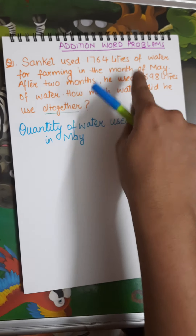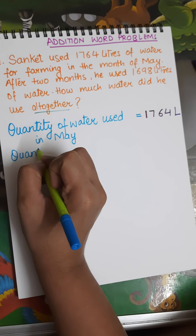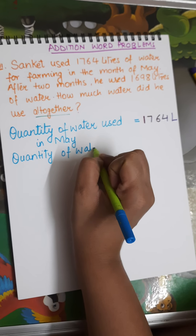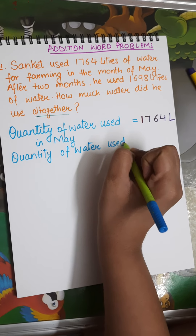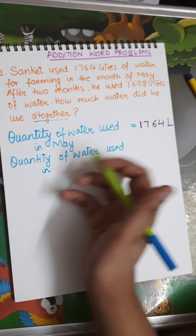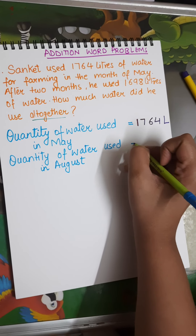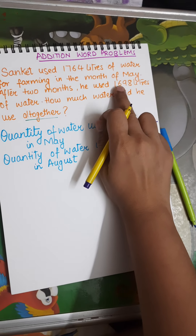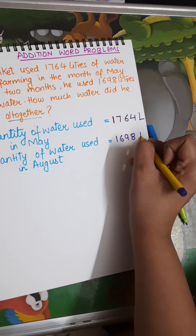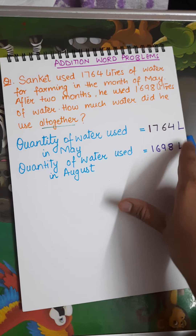The next statement is about the second amount. Quantity of water used after two months — that is in July — is one thousand six hundred ninety eight litres, so 1698 L.